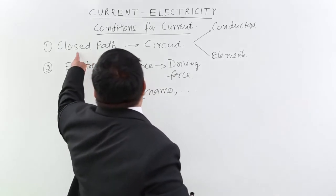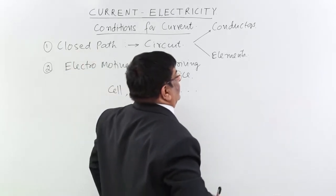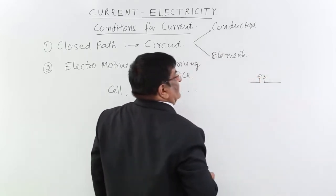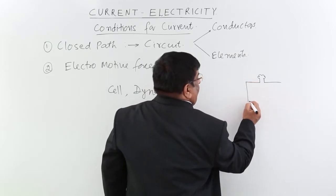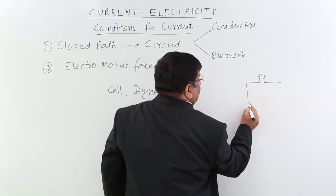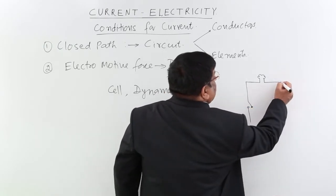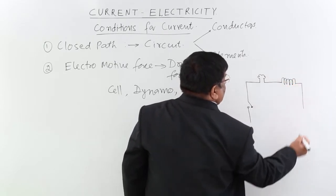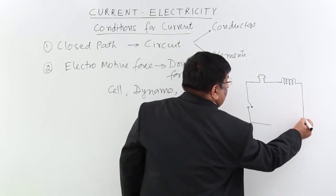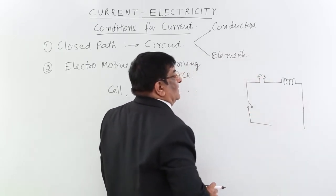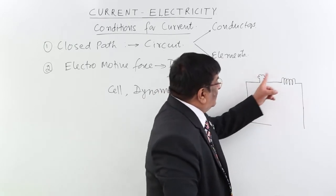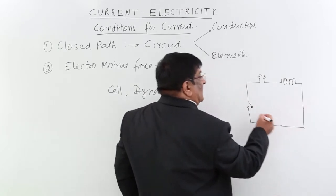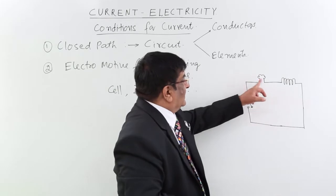Now when we call this closed path a circuit — suppose I have a bulb and I want to light it up, then I will connect it with a switch. I put a dimmer here. This is a dimmer, and I want current to flow through it. Then for the current to flow I should complete a circuit, and if I complete a circuit there are charges in the conductors.